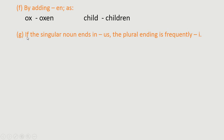Rule G: if the singular noun ends in -US, the plural ending is frequently -I. So we change -US to -I. For example: cactus→cacti, focus→foci.